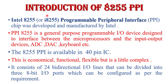Before I discuss the internal block diagram of 8255, here is a brief introduction. Intel 8255, or i8255, is a programmable peripheral interface chip developed by Intel. As the name suggests, it is programmable — peripheral means input/output device, and interface means the device provides communication between two components. So we can say that PPI 8255 is a general purpose programmable input/output interfacing device designed to interface between the microprocessor and I/O devices such as ADC, DAC, keyboard, etc.